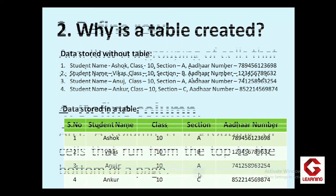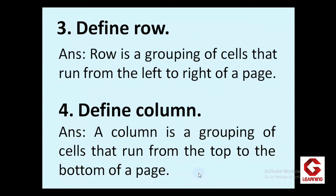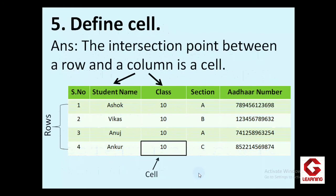Moving to the next slide — what is a row? A row is always horizontal and is a group or collection of cells from left to right. Next, what is a column? A column is always vertical and is a collection of cells from top to bottom. Next, what is a cell? The cell is the intersection of a row and column. In a table, many rows and columns are there and the intersection of each row and column forms one cell.